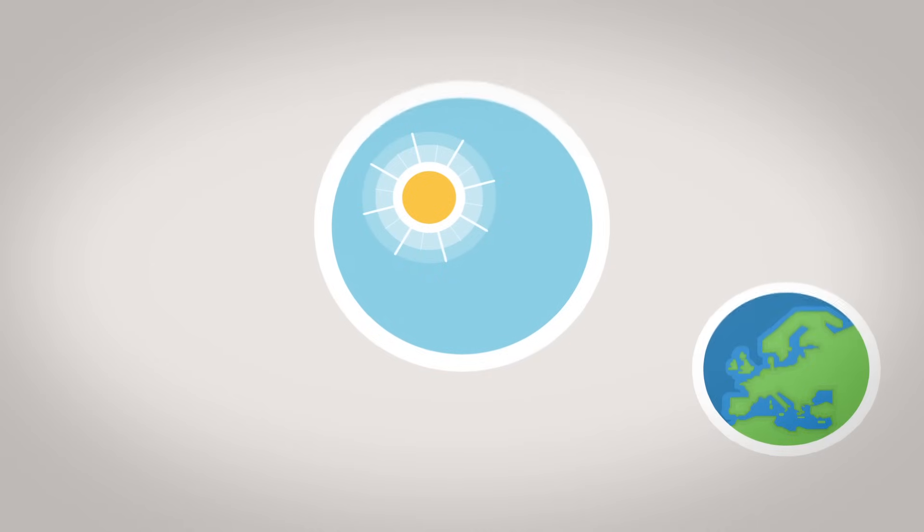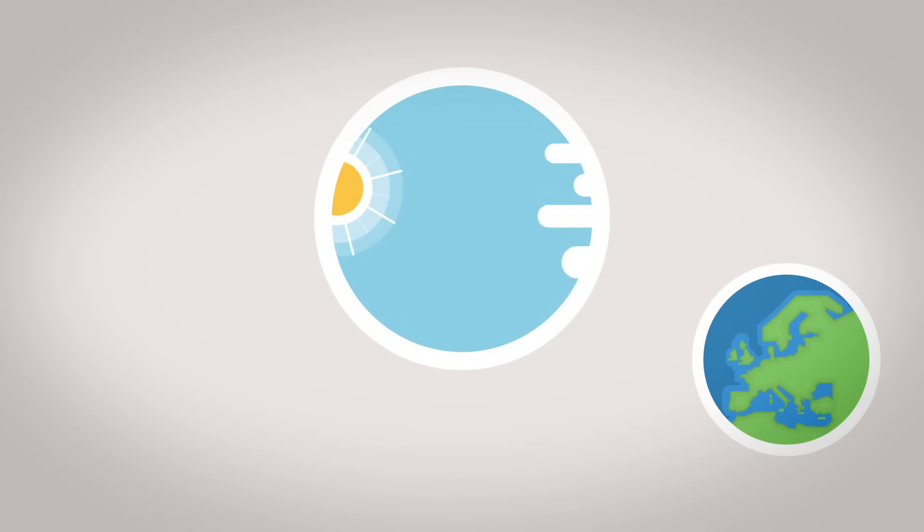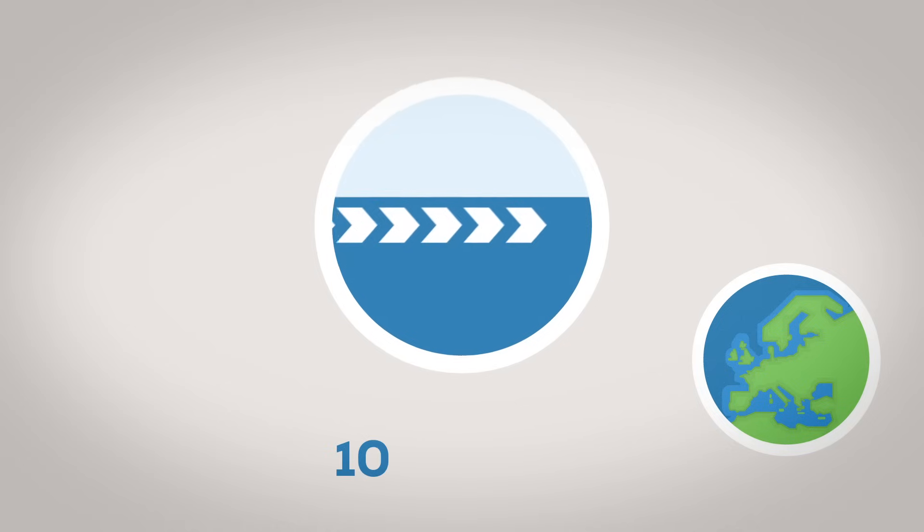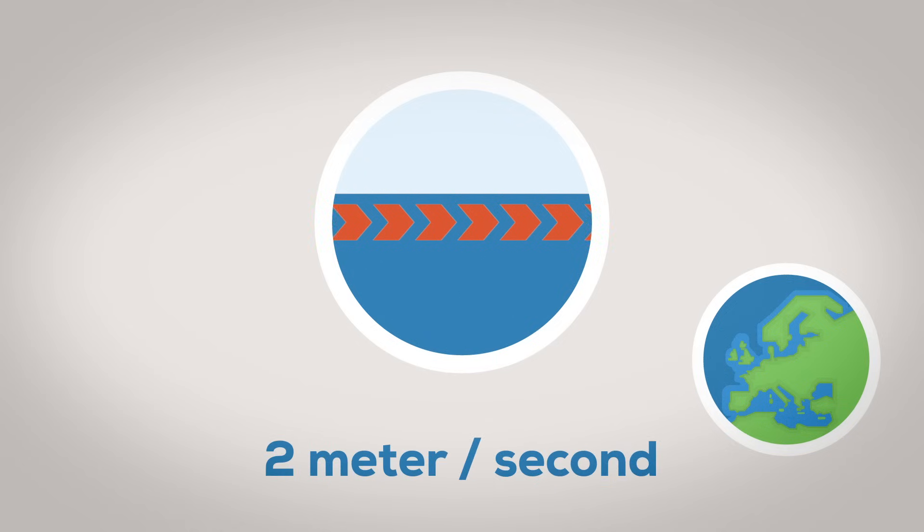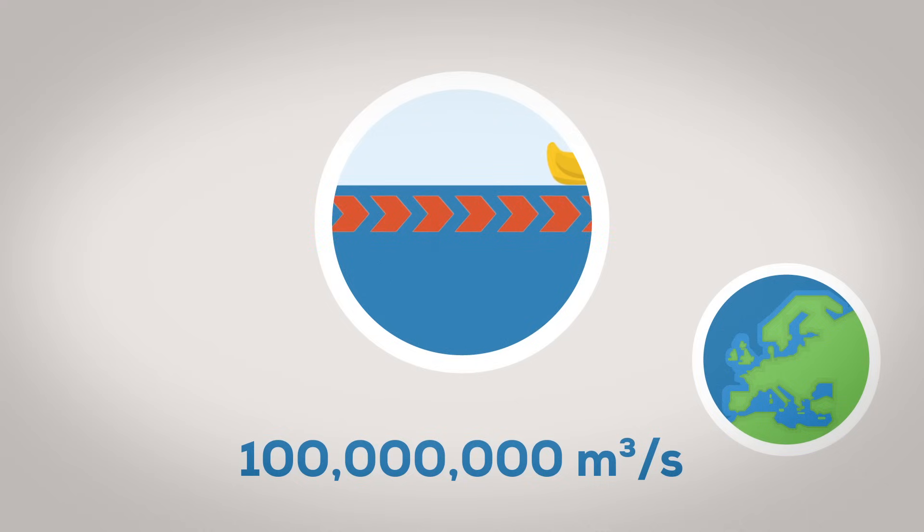The Gulf Stream is very important for the European climate. Its length of 10,000 kilometers makes it one of the largest and fastest ocean currents on Earth and it's very warm. At roughly two meters a second it brings up to 100 million cubic meters of water per second towards Europe.